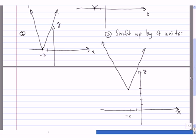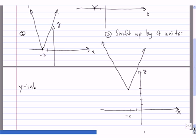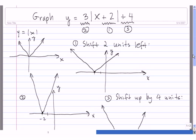Now, since we want to be as precise as possible, we should find this y-intercept of the graph. Remember, to find the y-intercept of the graph, you need to set x equal to 0. So we go back to the original function, 3 times the absolute value of x plus 2 plus 4.